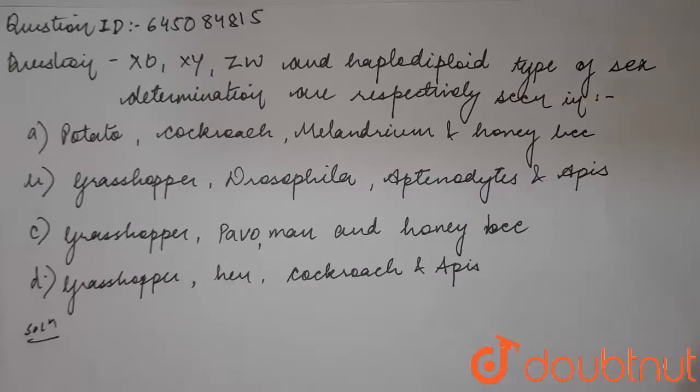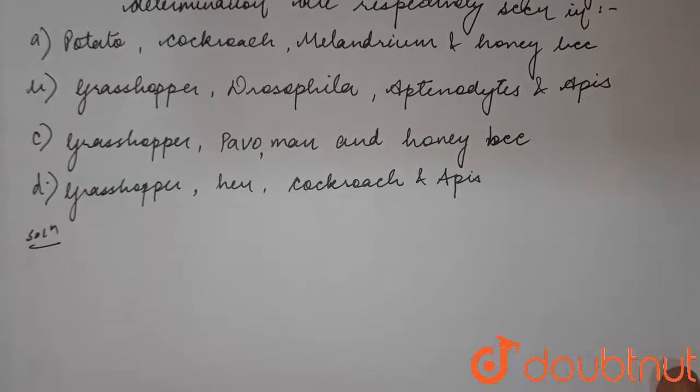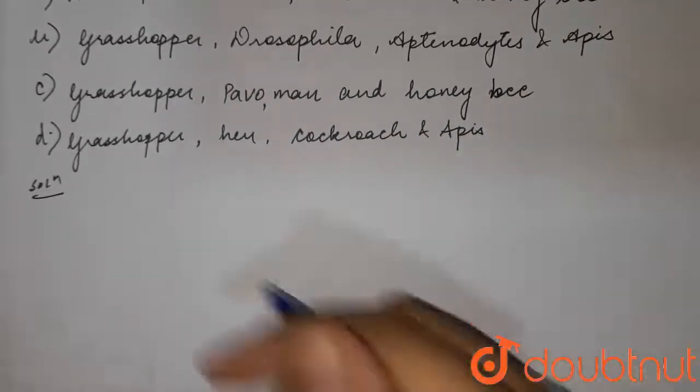The question asks: XO, XY, ZW, and haplodiploid type of sex determination are respectively seen in: A) potato, cockroach, Melandrium, and honeybee; B) grasshopper, Drosophila, Aptenodytes, and Apis; C) grasshopper, peafowl, and honeybee; D) grasshopper, hen, cockroach, and Apis.